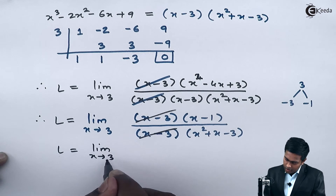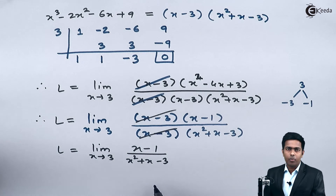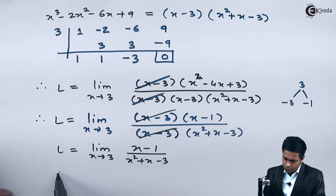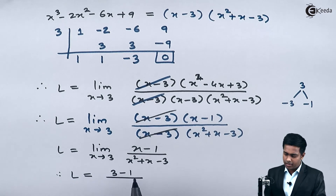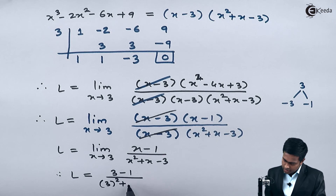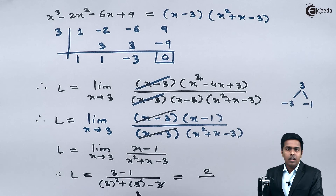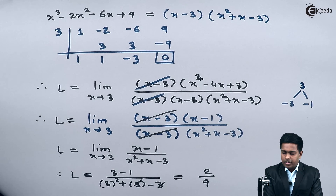Now we apply the direct method to the simplified expression (x - 1) upon (x² + x - 3). Substituting x = 3: the numerator is 3 - 1 = 2, and the denominator is 3² + 3 - 3 = 9 + 3 - 3 = 9. Hence the value of the given limit is 2/9. Thank you.